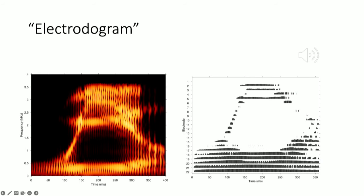Another helpful way to visualize the signal being sent to a cochlear implant is the electrodogram. A spectrogram plots the spectrum of frequencies of a given sound over time — in this case, of the speech signal 'wheel.' The electrodogram is similar to a spectrogram, and it plots the current levels of each of the 22 electrodes in a cochlear implant, where each electrode can be thought of as corresponding to a single frequency band in a vocoder.